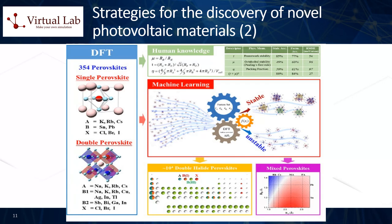Four: guided experimentation. By combining first principles simulations with experimental work, researchers can greatly speed up the discovery process. Simulations can guide the experiments, helping to focus on the most promising materials and experimental conditions. Conversely, experimental results can be used to validate and refine the simulations. Five: machine learning integration. First principles data can serve as a robust database for machine learning algorithms, fostering the development of predictive models. This approach can expedite the screening and optimization of new materials by learning patterns from previously computed first principles data.